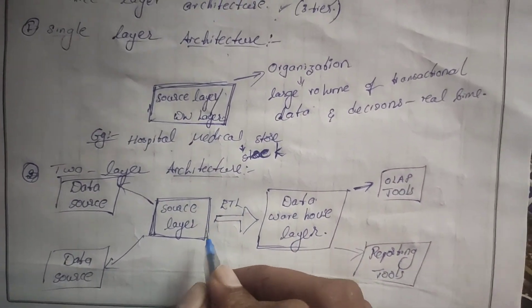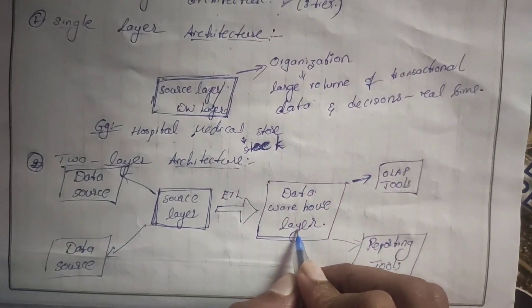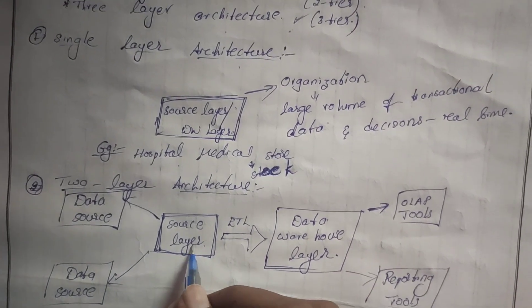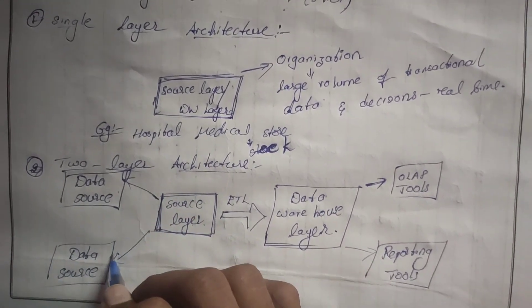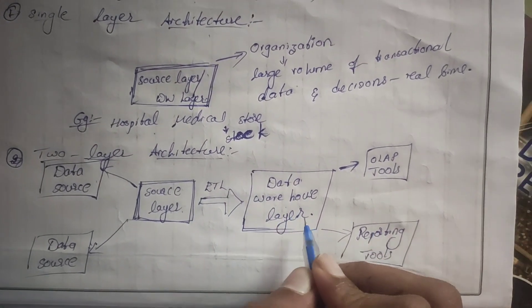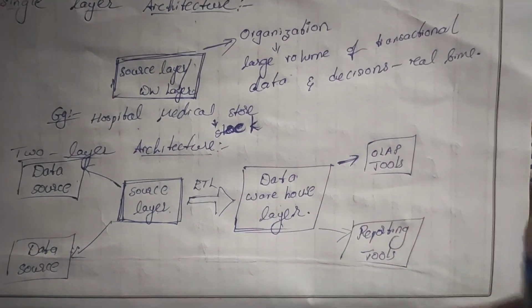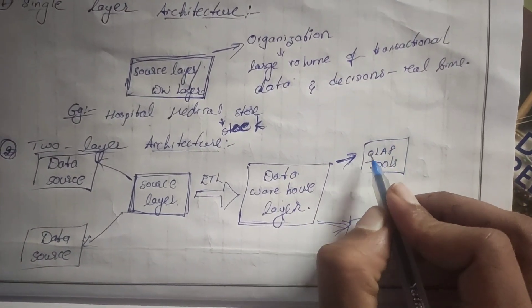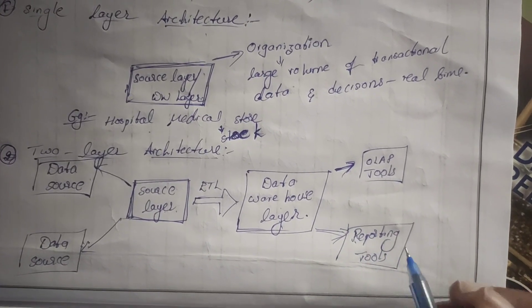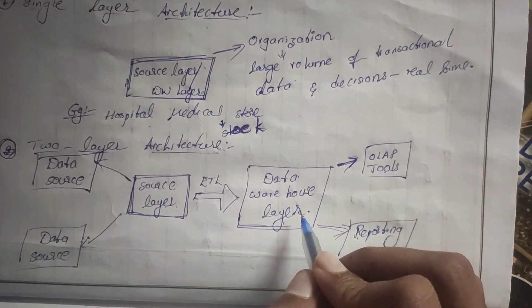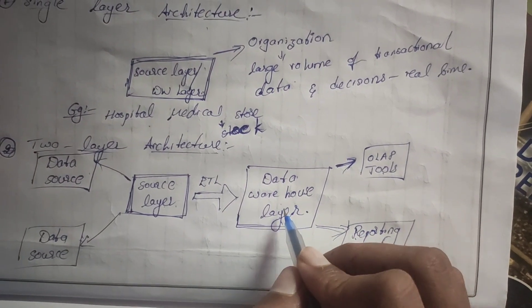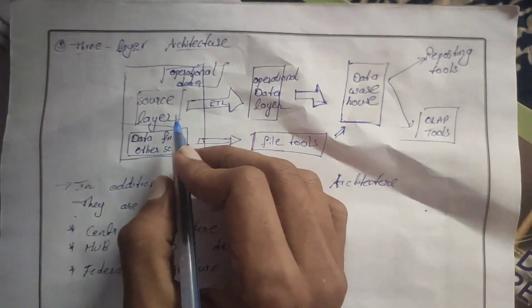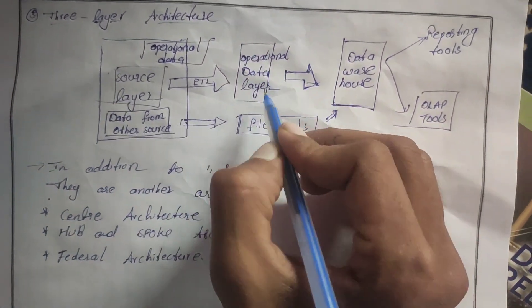Two layer architecture consists of two layers: the source layer and the data warehouse layer. The source layer extracts data from data stores using an ETL tool and stores it in the data warehouse layer. When we want to access something, we use OLAP tools and reporting tools to access the data warehouse.